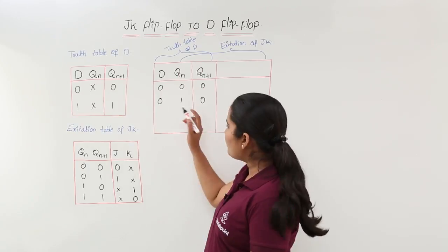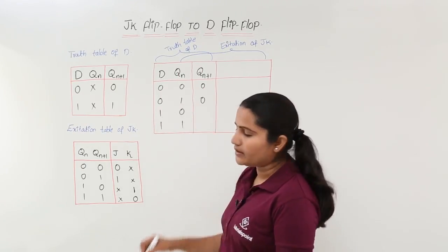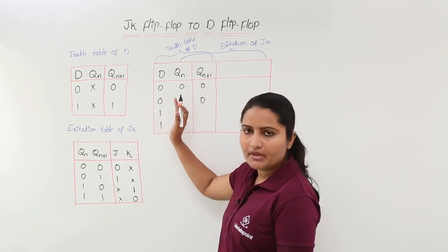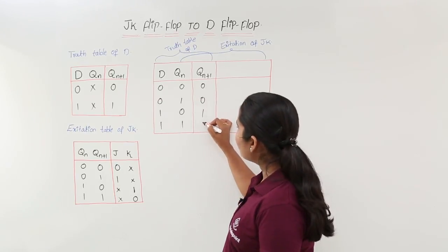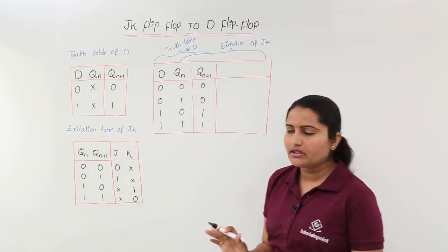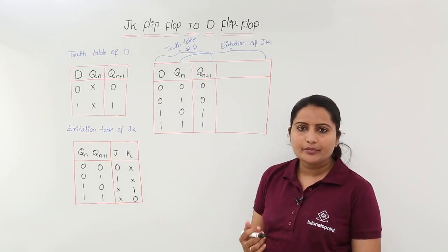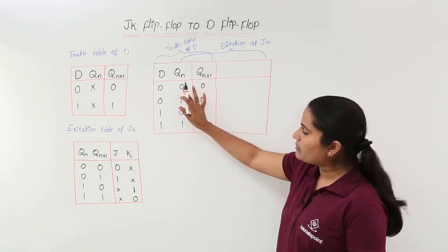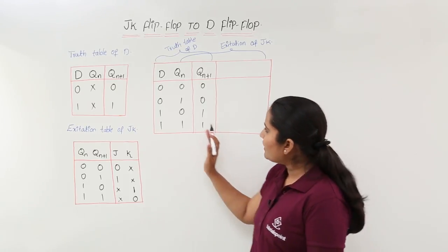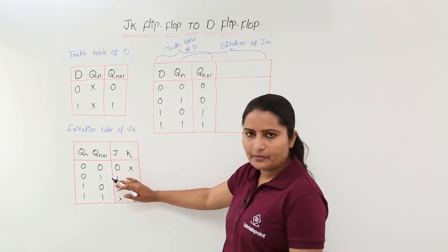When D = 1, Q(n) may be either 0 or 1, and again the output depends only on D, so Q(n+1) = 1 in both cases. We have now taken the extended truth table of the destination flip-flop D, and we will extend it further to match the excitation table of the source flip-flop JK.